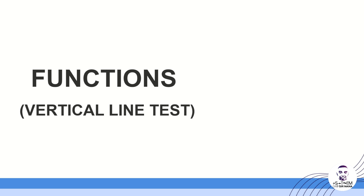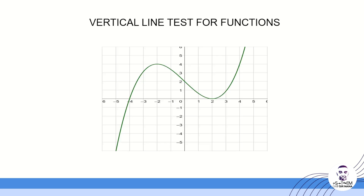In this lesson we want to look at the vertical line test for functions. We want to consider how we can look at a graph and determine whether that graph is a function or not a function. So let's consider this graph so that we can determine whether it is a function or not using the vertical line test. We have this graph on the Cartesian plane — the x-axis and the y-axis.